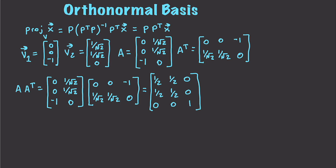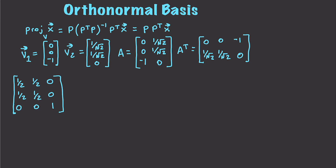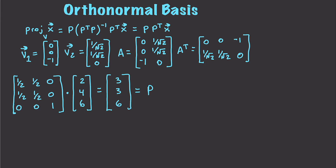Let's say we have a vector (2, 4, 6). If we go and work this out using our projection matrix, this is going to come out to (3, 3, 6). And this is the projection of that vector into the subspace V. Hopefully I've cleared up what it means to be orthonormal, how to verify if vectors are orthonormal, and how they can be used to make projections onto new subspaces.